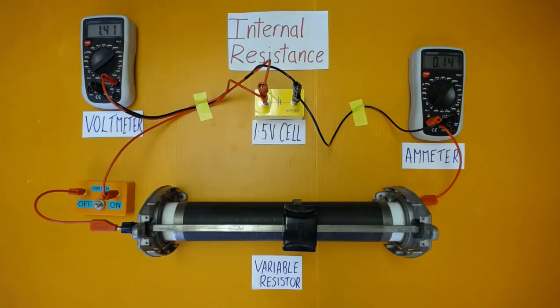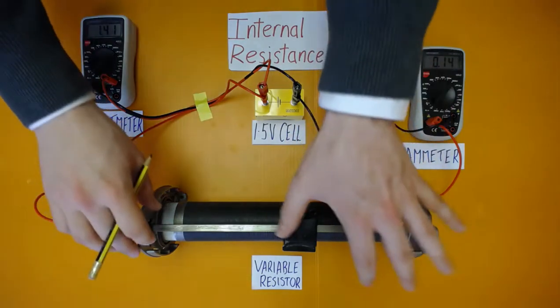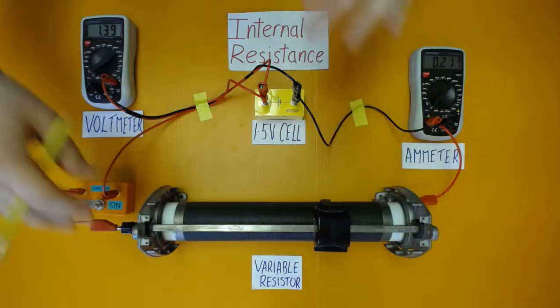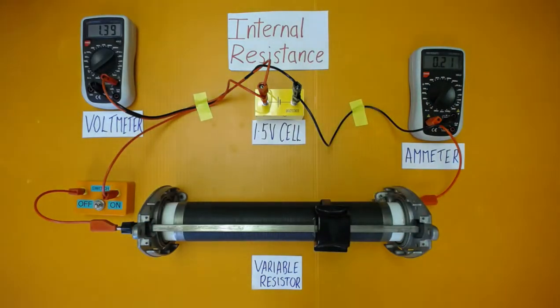For our new resistance, we have the current at 0.14 amps and the terminal potential difference at 1.41 volts. Decreasing the resistance again, we have a current of 0.21 amps and a terminal potential difference of 1.39 volts.